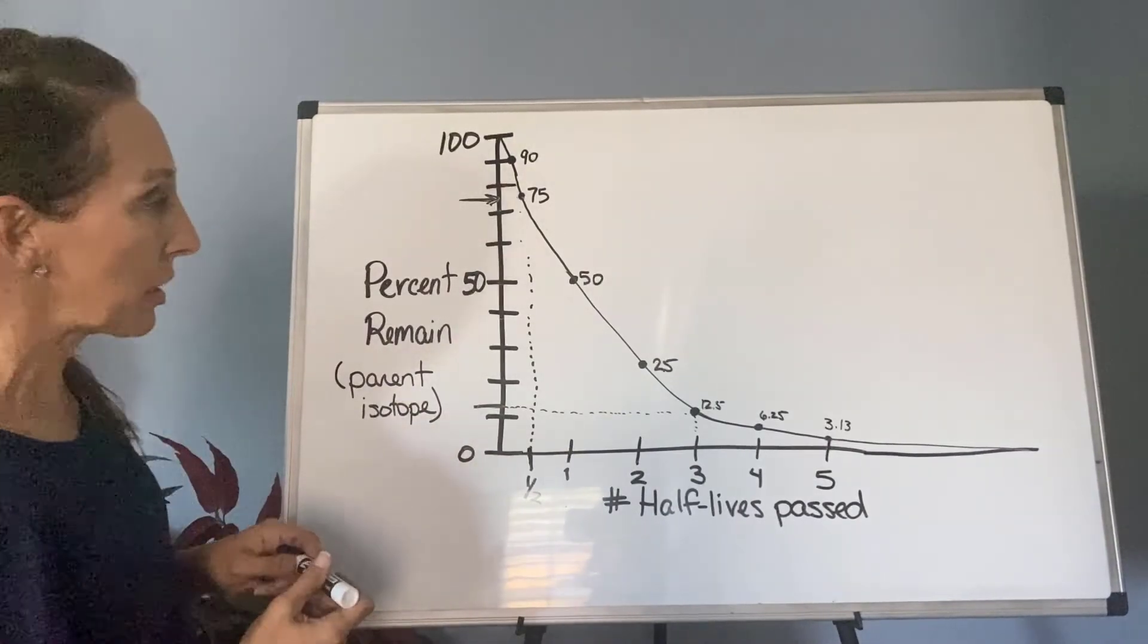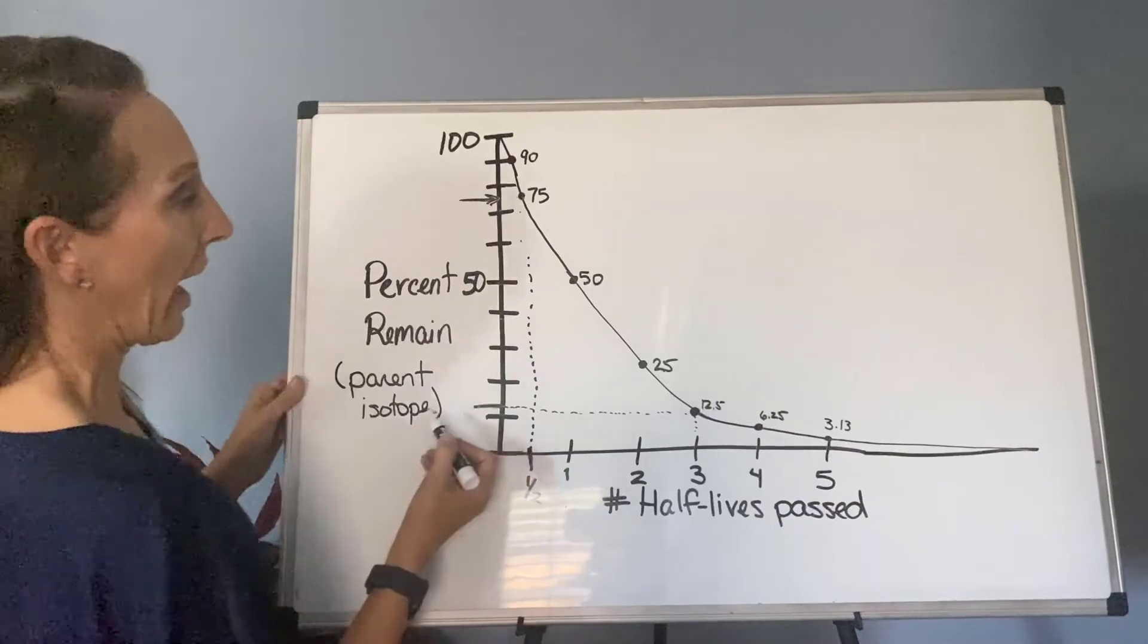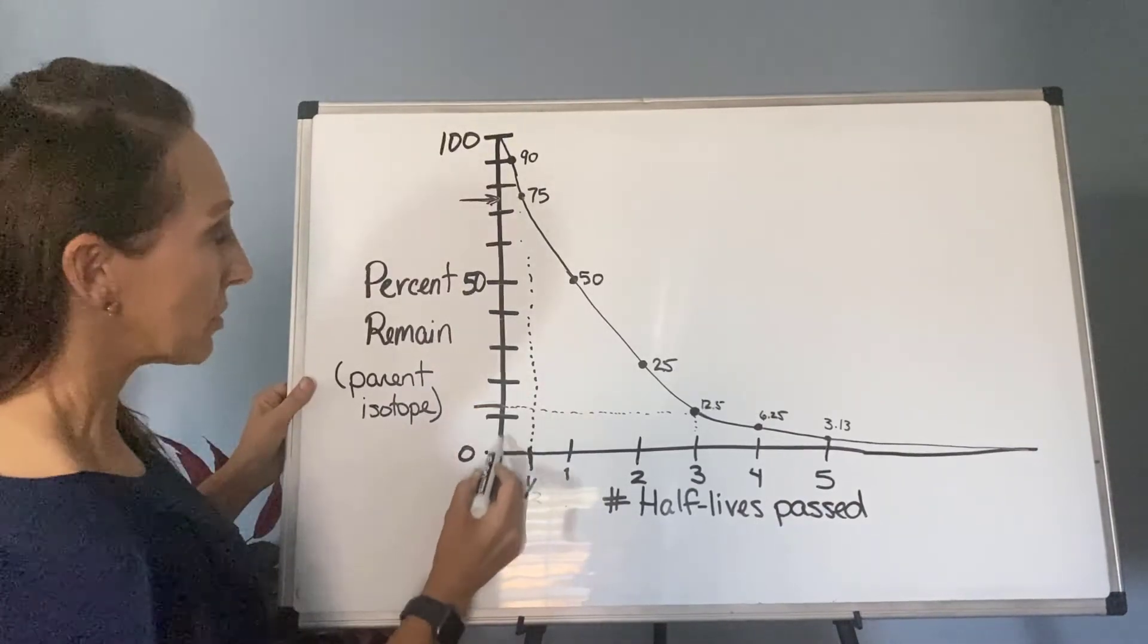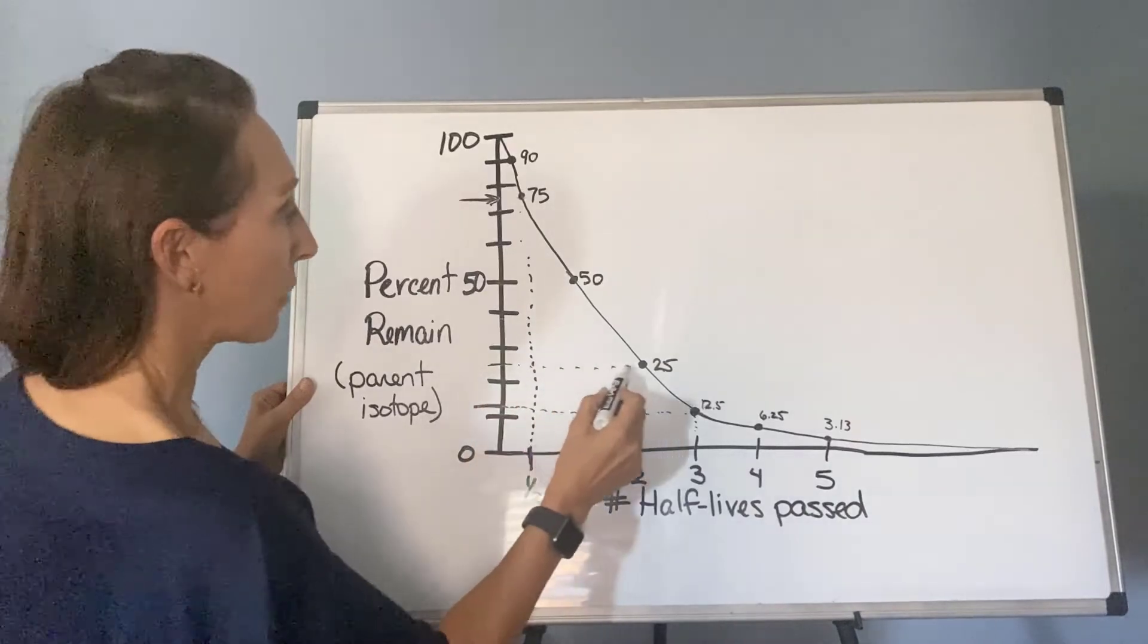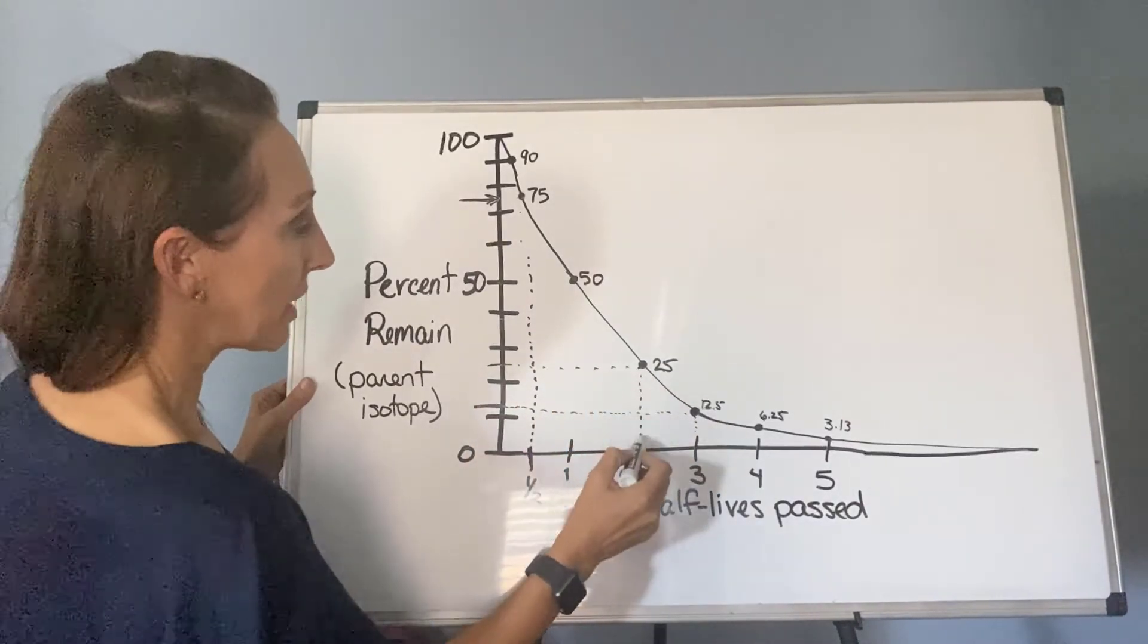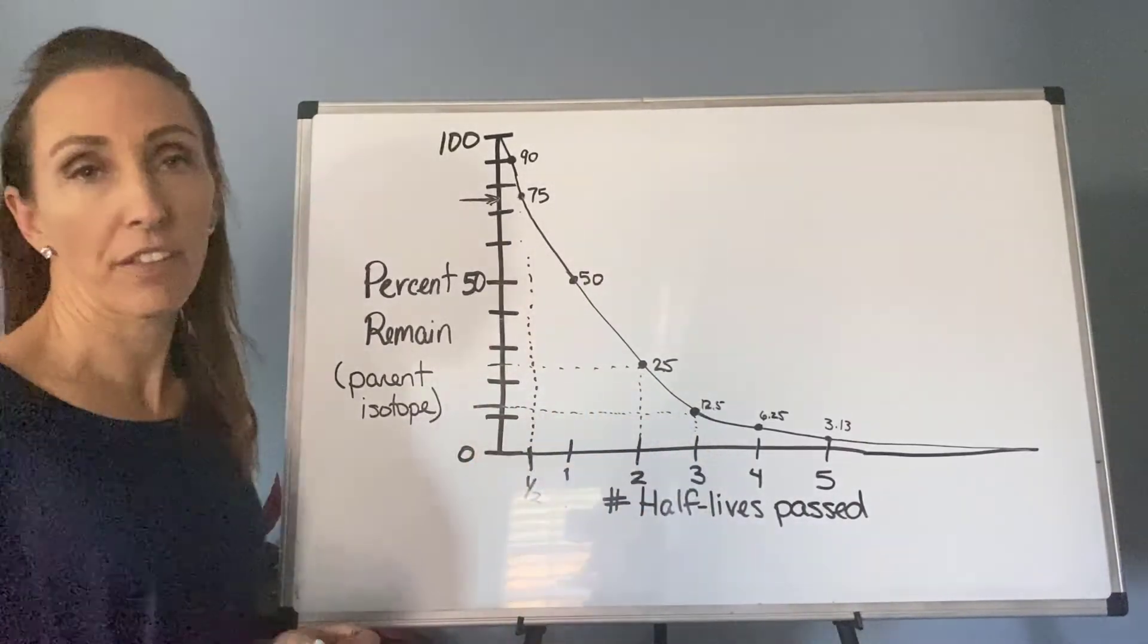You can do another example and say, what if I have 25%? So 10, 20 - 25 lands right in here. I would come over and then go down, and it would be two half-lives that have passed.